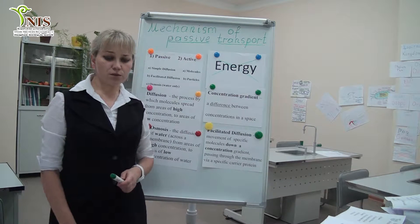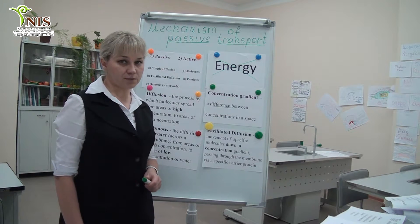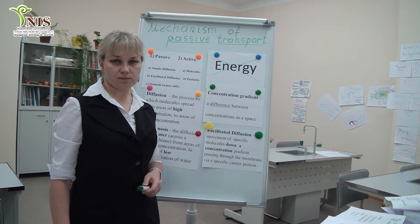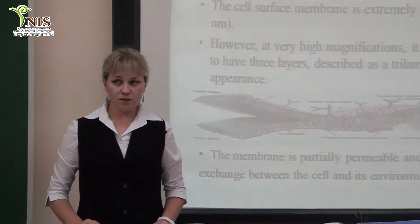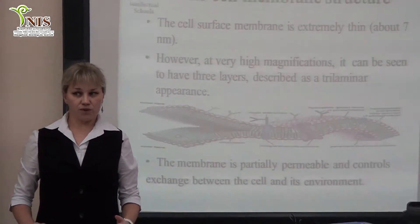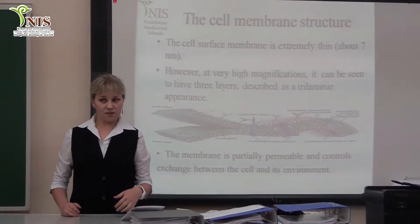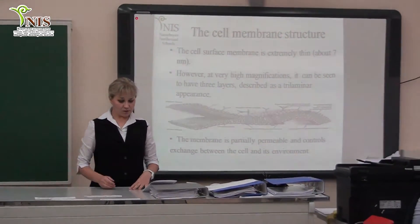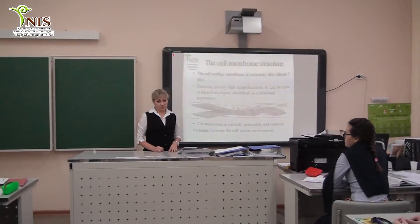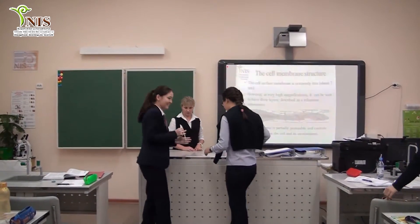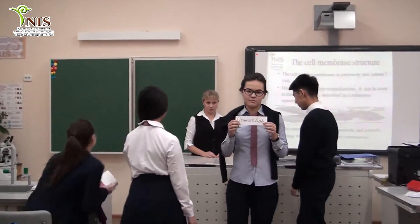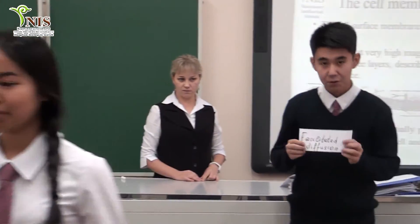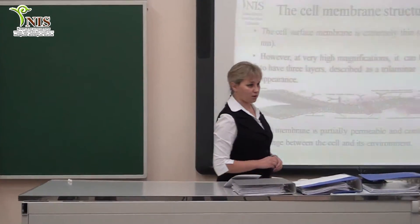Now let's talk about the types of passive transport that students will present. We are going to work in groups — each group will discuss only one type of passive transport and then present their work. Please come to the table and choose the label for your type of passive transport. One group begins: osmosis is the diffusion through a partially permeable membrane.